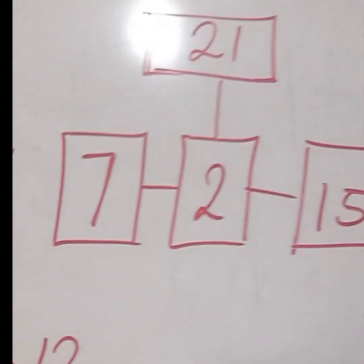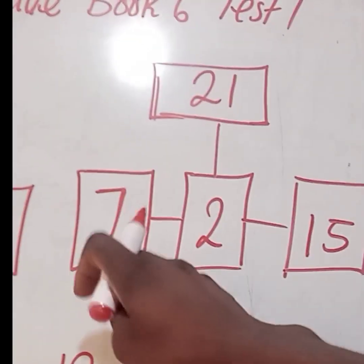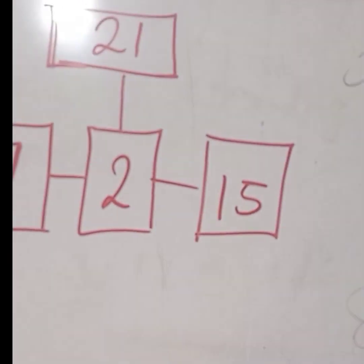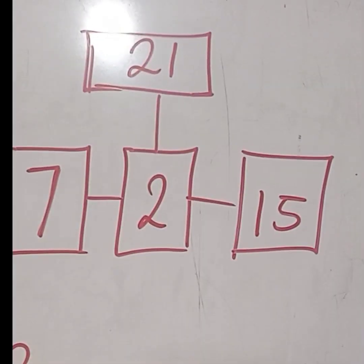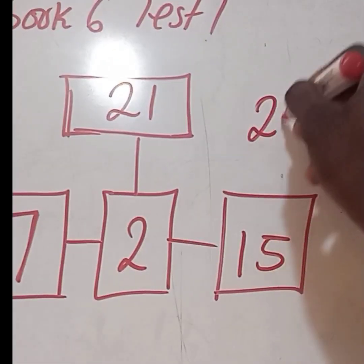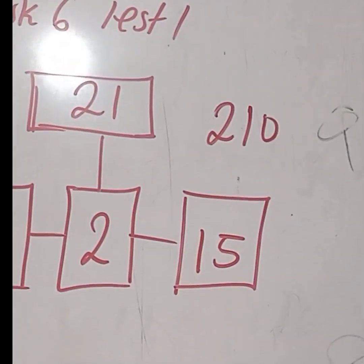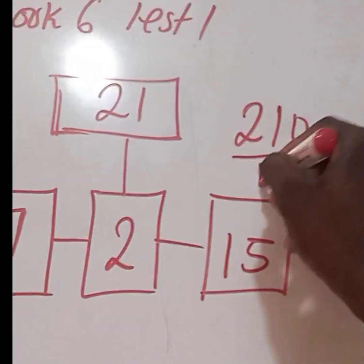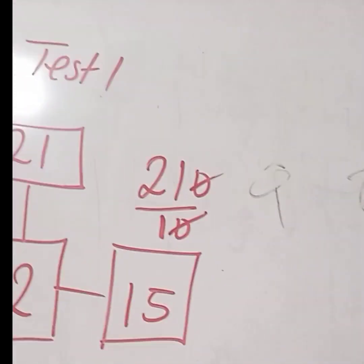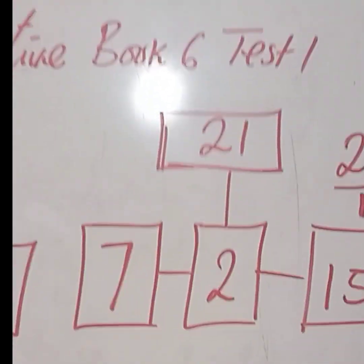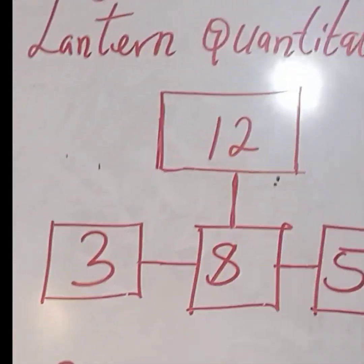The same thing here. If you want to get 21 here, you do 7 times 2. That is 14. 14 times 15. If you do that, you are going to get 210. 14 times 15 is 210. 210 divided by constant 10. 21 divided by 1. Your answer is 21. So this is how to get 21, and this is how to get 12.